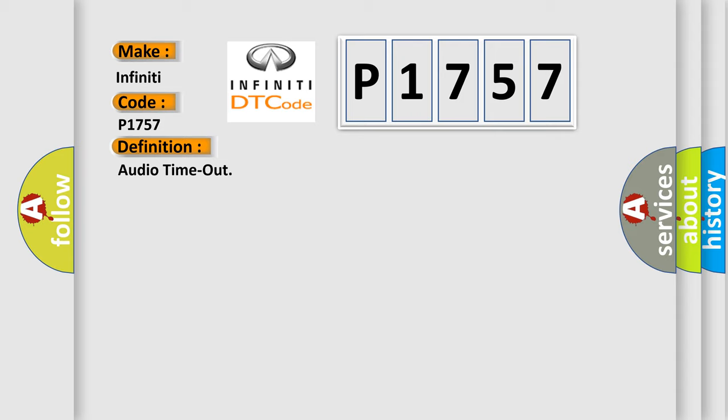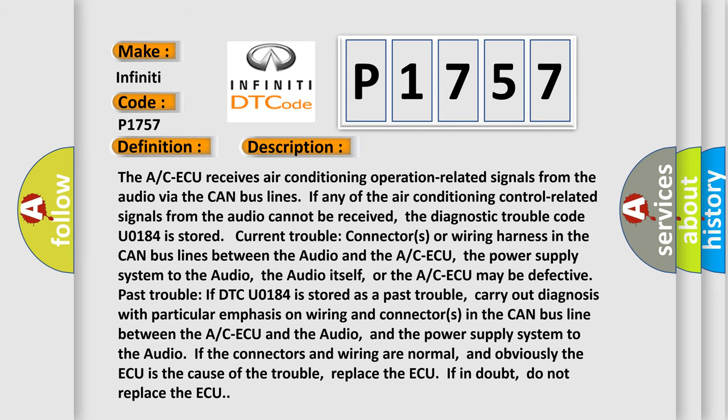The basic definition is audio timeout. The ACAQ receives air conditioning operation related signals from the audio via the CAN bus lines. If any of the air conditioning control related signals from the audio cannot be received, the diagnostic trouble code U0184 is stored. Current trouble: check connectors or wiring harness in the CAN bus lines between the audio and the ACAQ, the power supply system to the audio, the audio itself, or the ACAQ may be defective. Past trouble: if DTC U0184 is stored as a past trouble, carry out diagnosis with particular emphasis on wiring and connectors in the CAN bus line between the ACAQ and the audio, and the power supply system to the audio. If the connectors and wiring are normal and the ACAQ is the cause of the trouble, replace the ACAQ. If in doubt, do not replace the ACAQ.